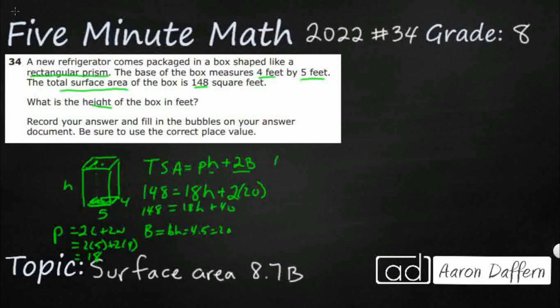All right, so what I'm going to do is subtract 40 from both sides. And that's going to be 18H plus 40 minus 40. So now I've got 108 equals 18H.